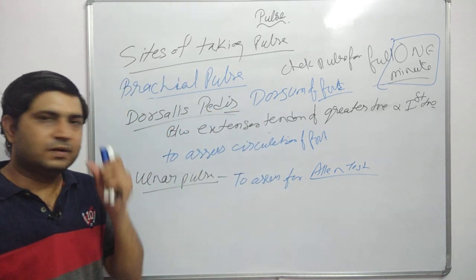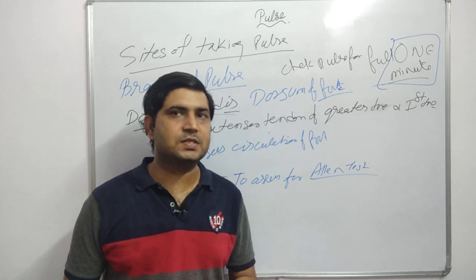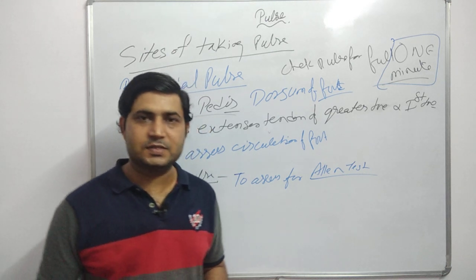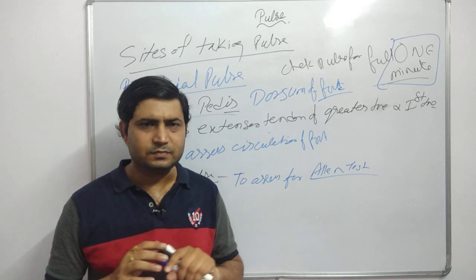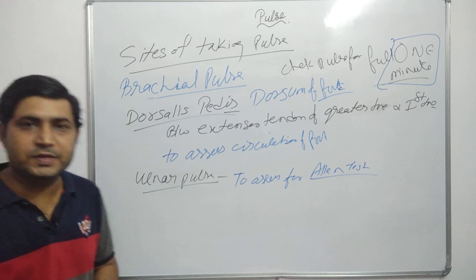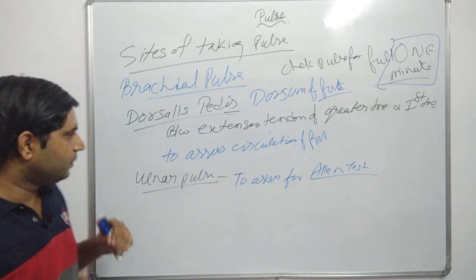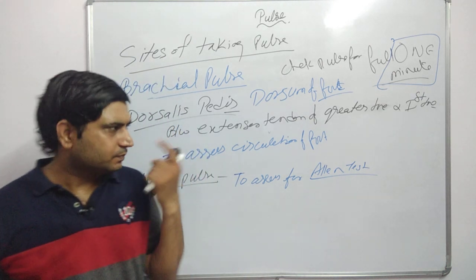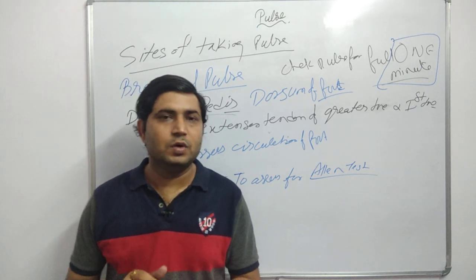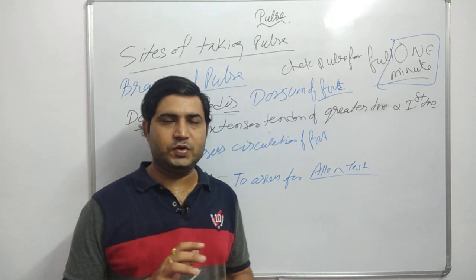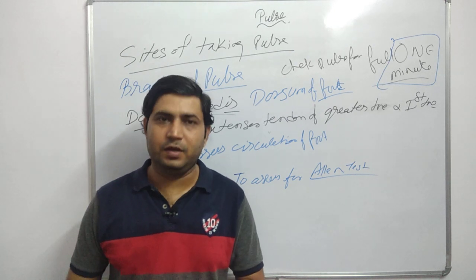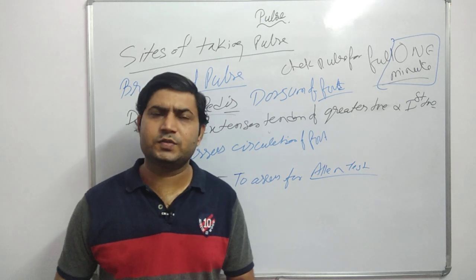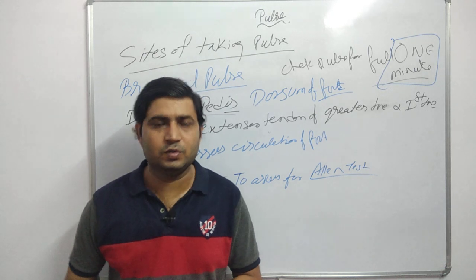Today we discussed the sites of pulse: radial pulse (most common), temporal pulse, carotid pulse, apical pulse (the only pulse which is auscultated), brachial pulse, femoral pulse, popliteal pulse, posterior tibial pulse, dorsalis pedis pulse, and ulnar pulse. Questions come from these pulse sites in competitive exams. I hope you have cleared your doubts. Please like, share with your friends and nursing colleagues. Thank you so much for your valuable time. Jai Hind, Jai Bharat.